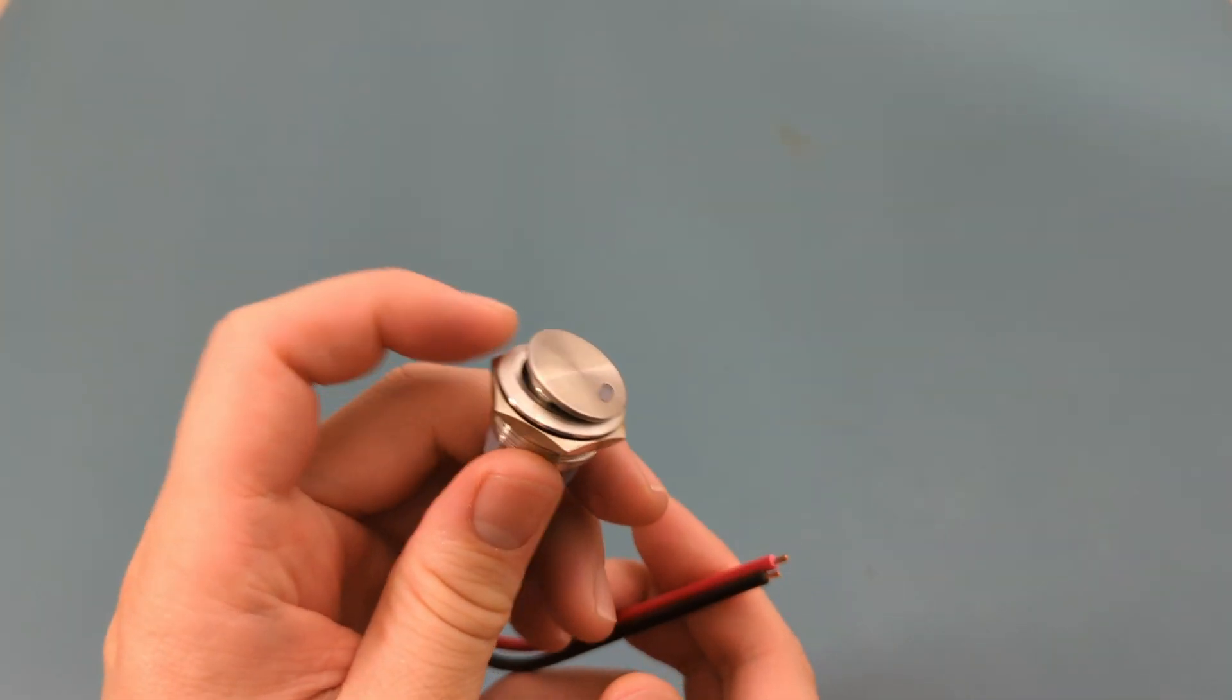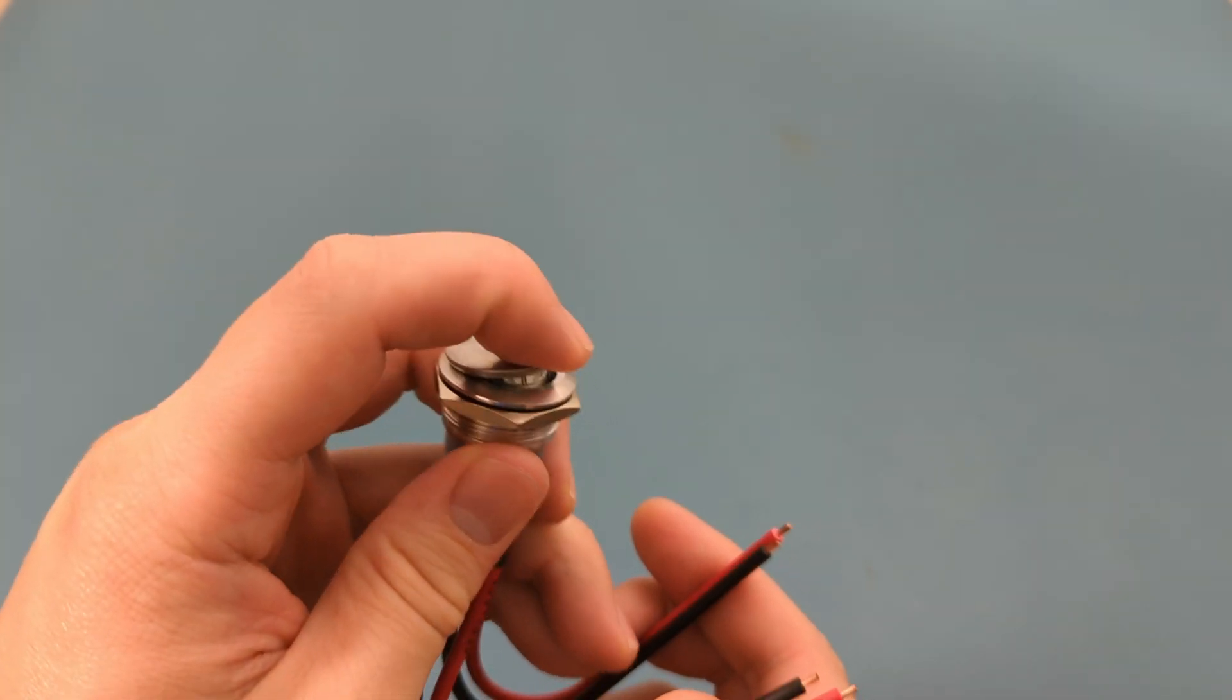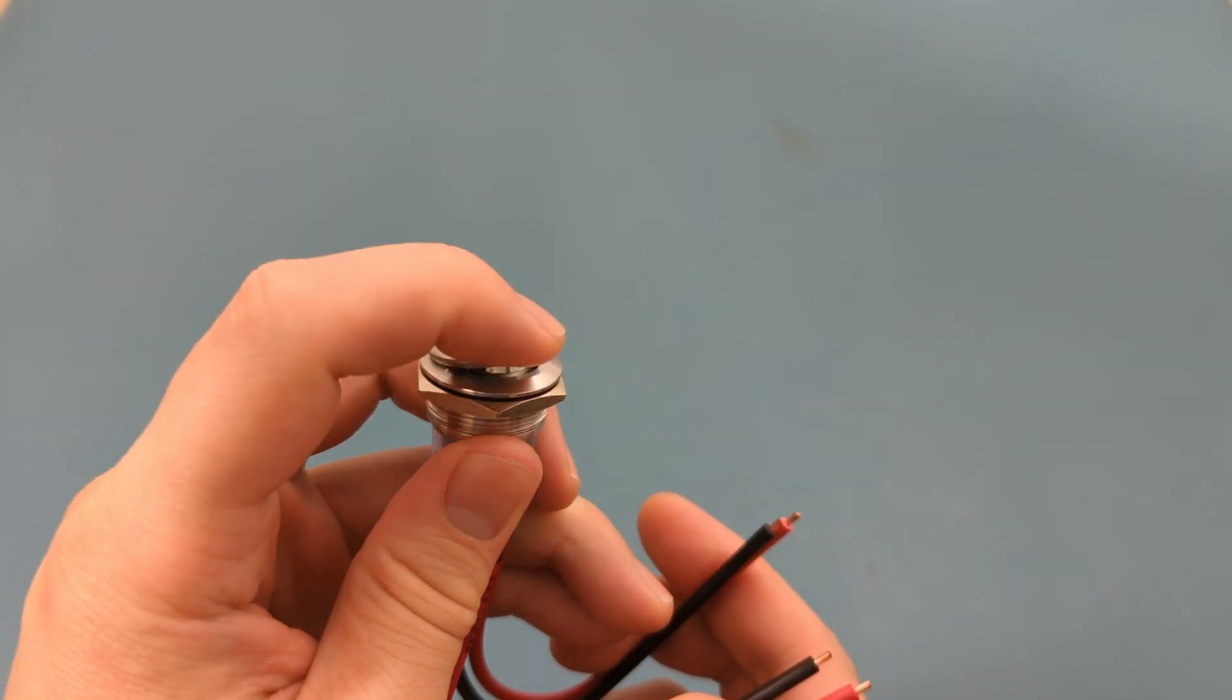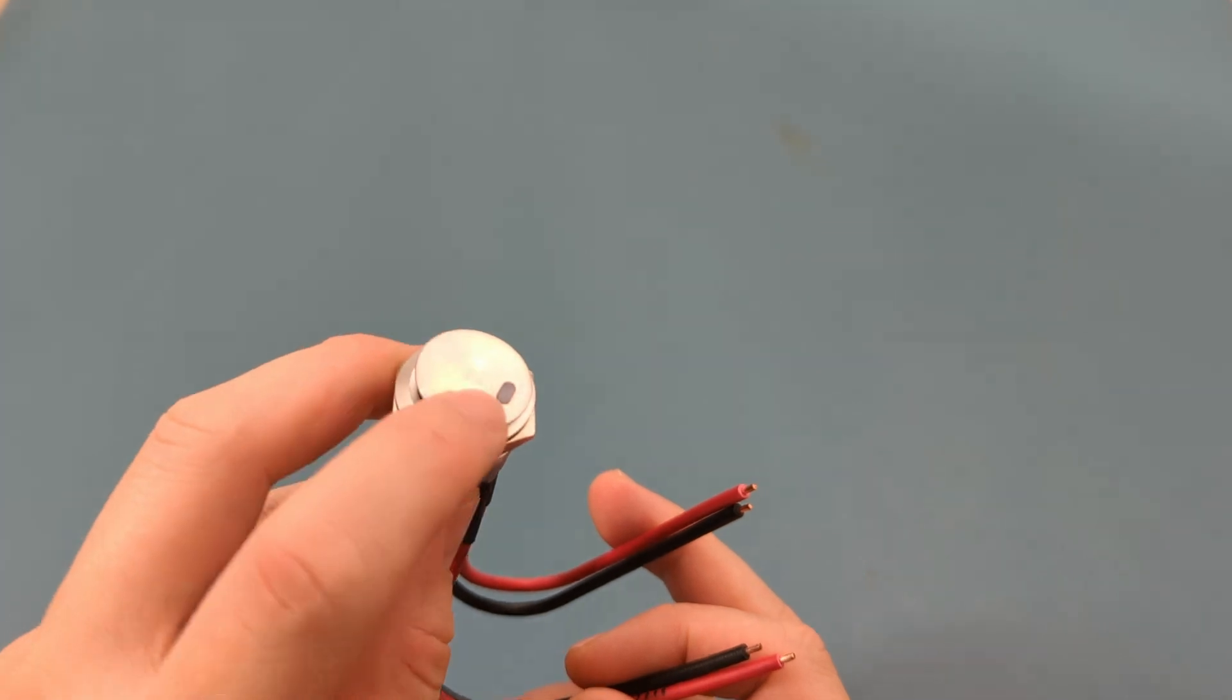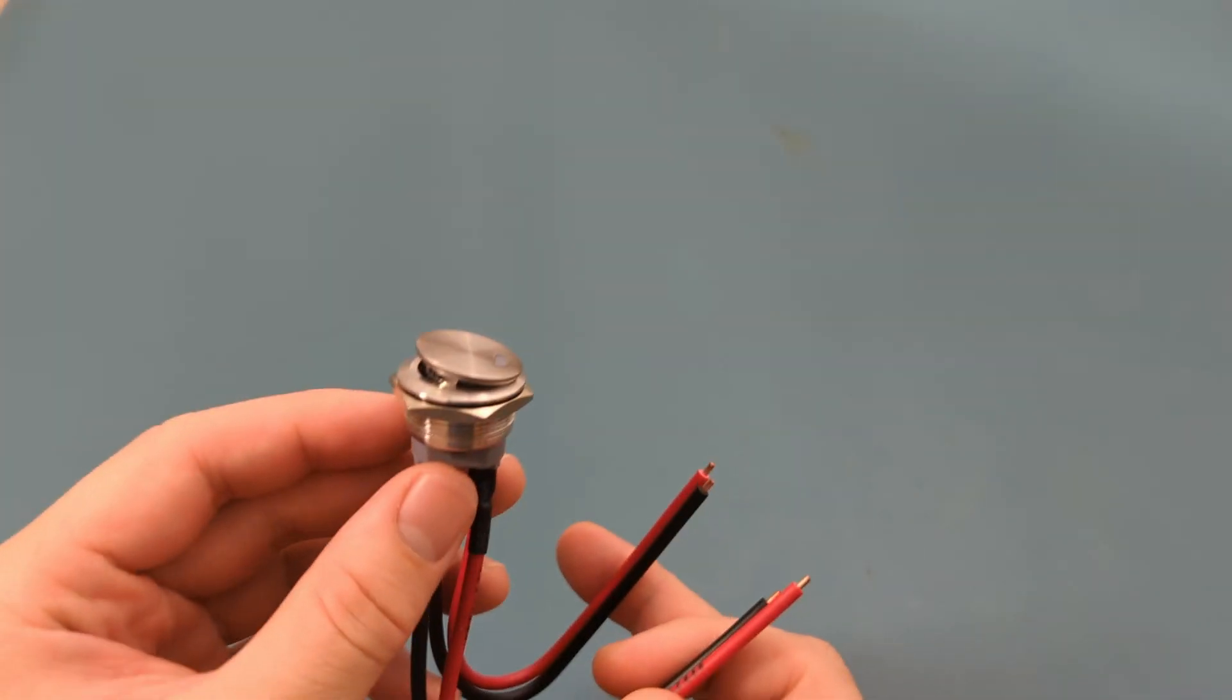This is another two-position switch. You have the on and off position. There are four wires because two wires are for the power supply, and two wires are for the LED light on top.